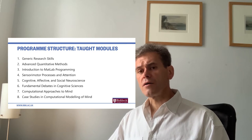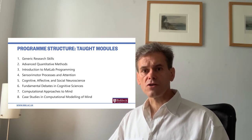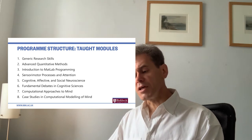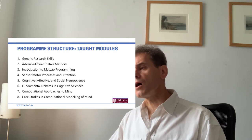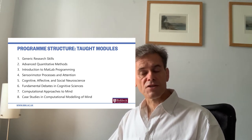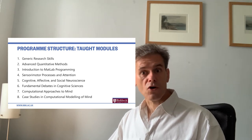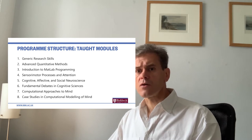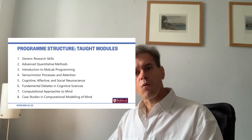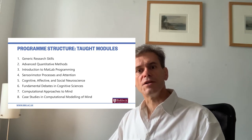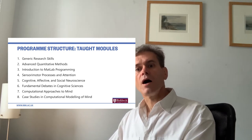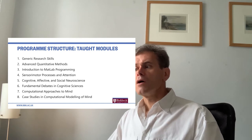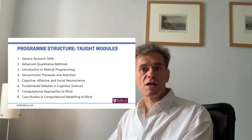We then have three modules specific to the Cognition and Computation course. Fundamental Debates in Cognitive Science covers issues that have shaped cognitive science over the last 40–50 years — things like nature-nurture, the nature of mental representation, and consciousness. We also take a historical perspective, examining why psychology developed as it did, how behavioural psychology gave way to cognitive psychology, and why cognitive science has ended up where it is now.